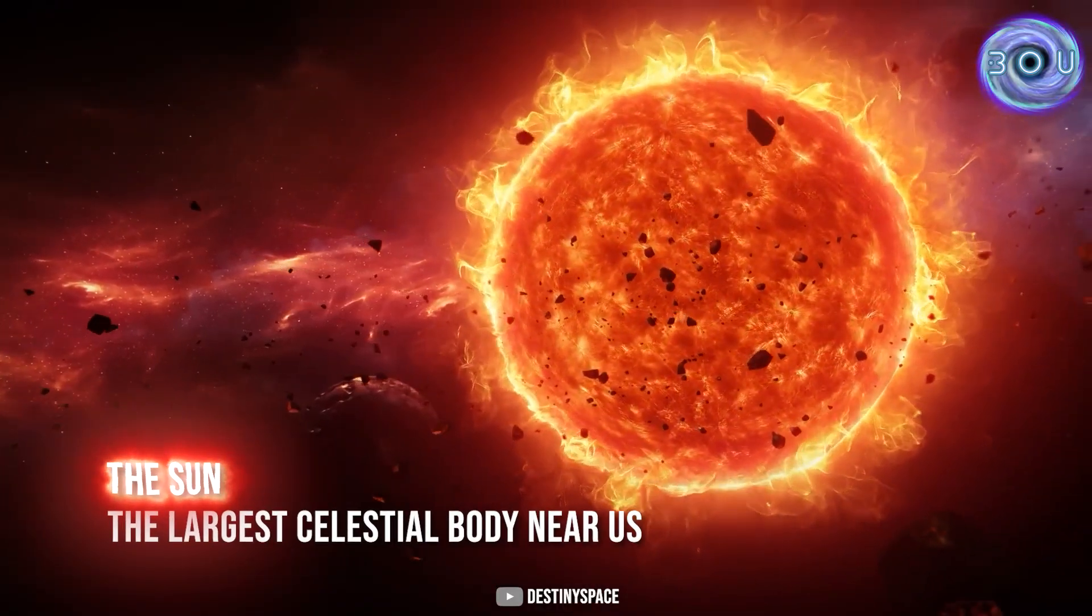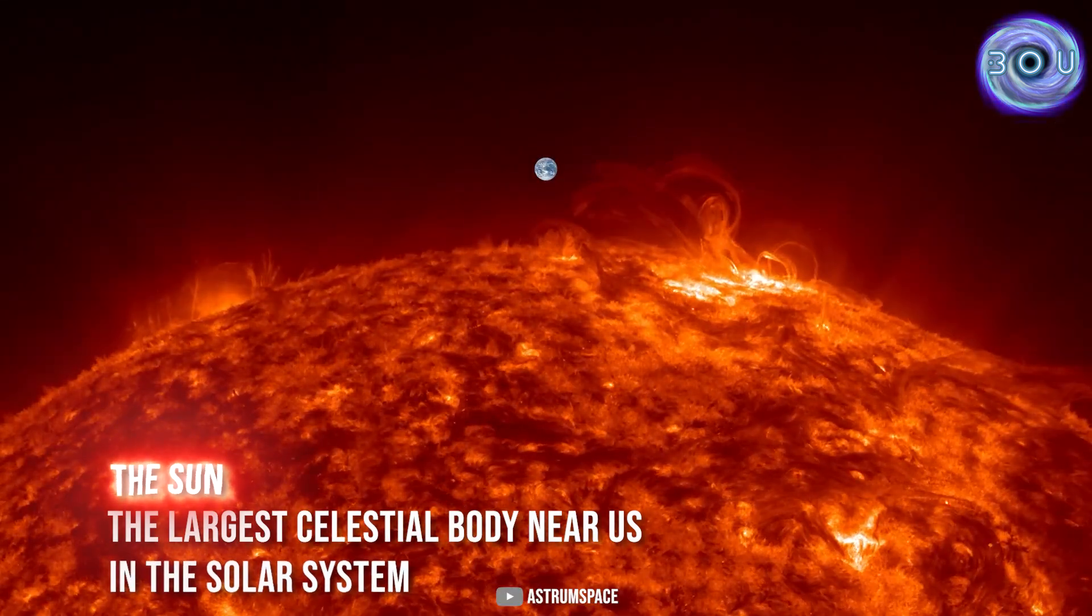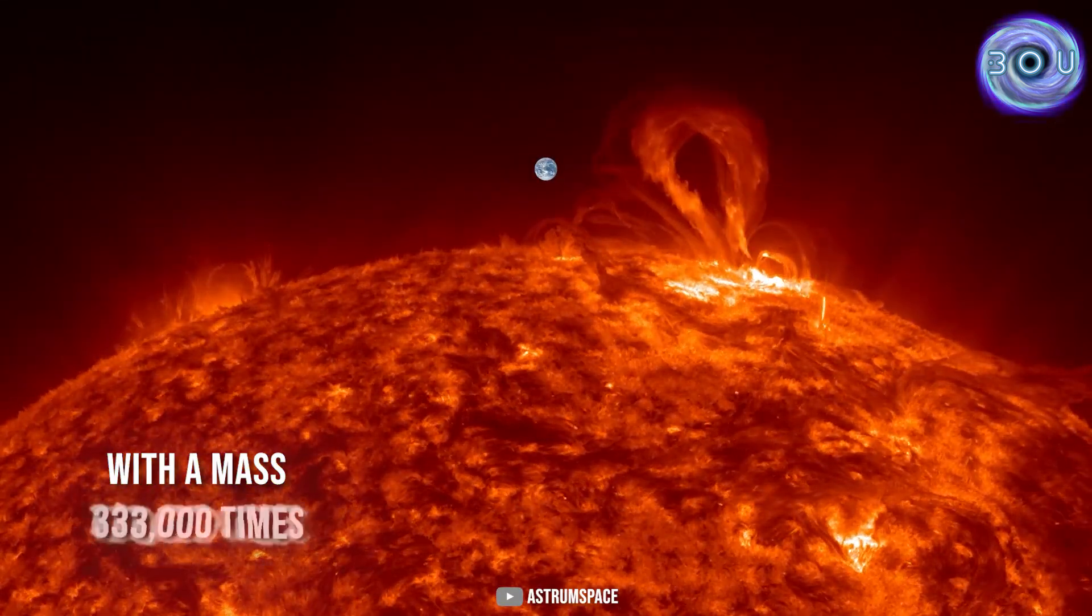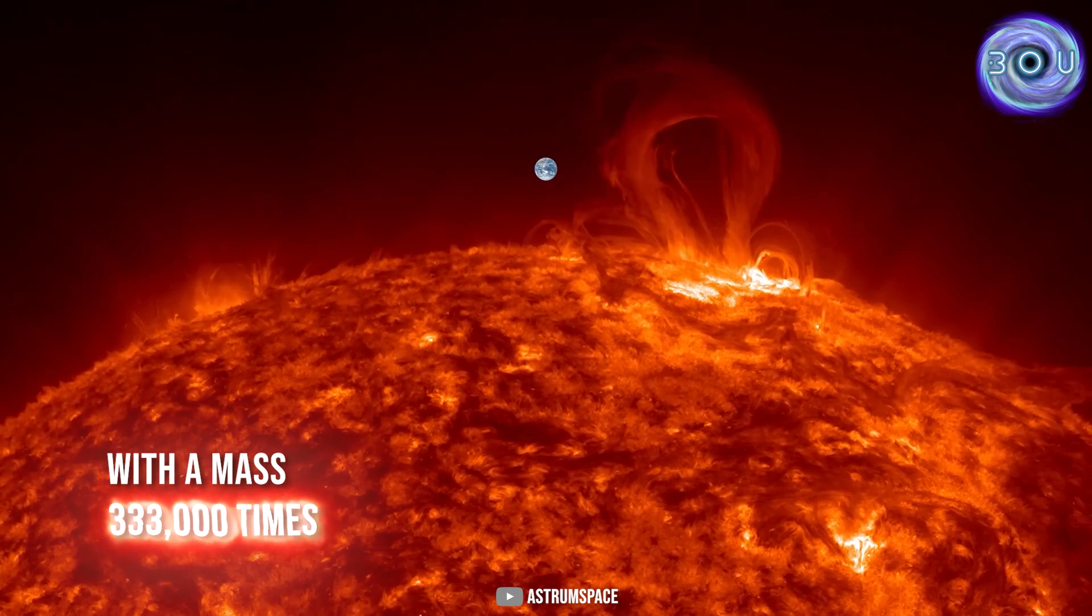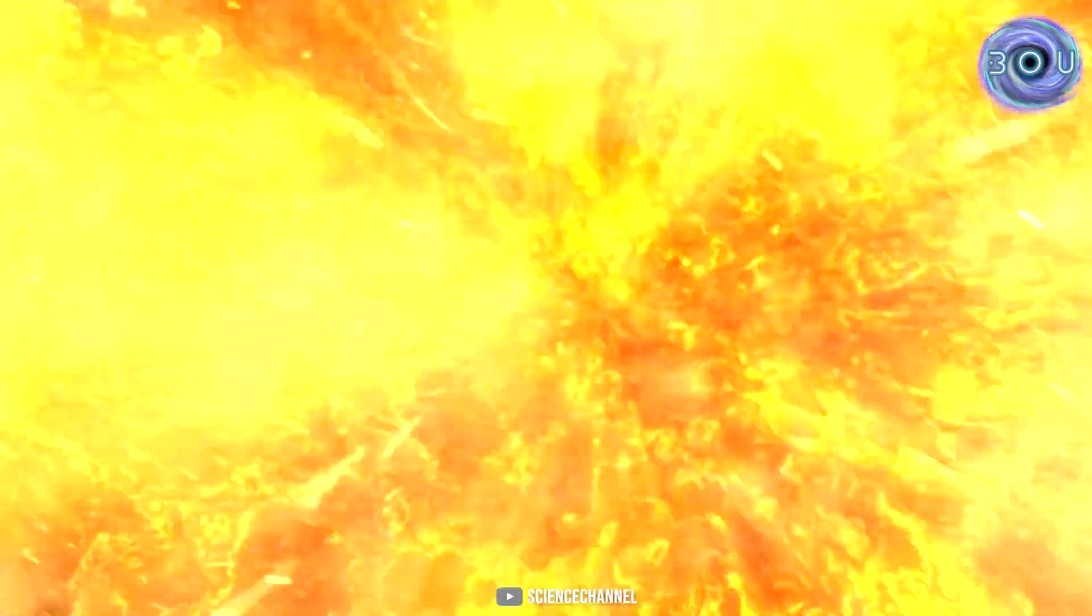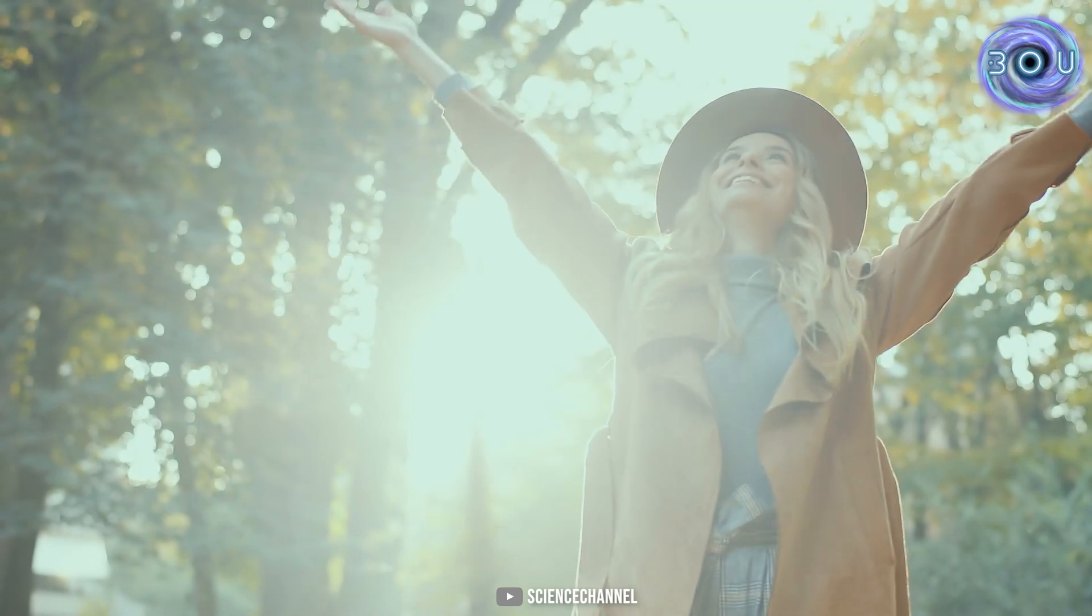The Sun, the largest celestial body near us in the solar system, with a mass 333,000 times that of the Earth. A star typically composed of hydrogen and helium, which has gifted life to Earth.